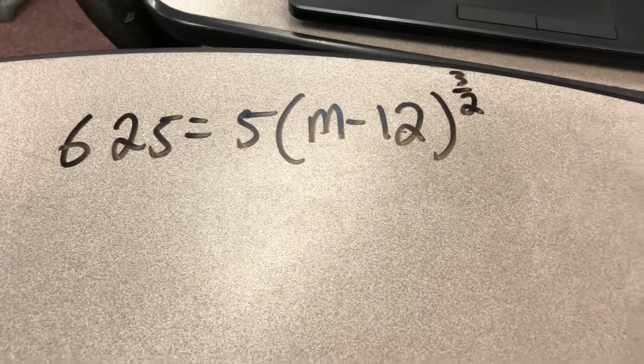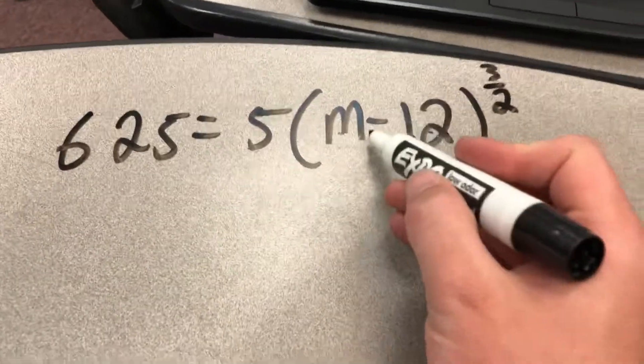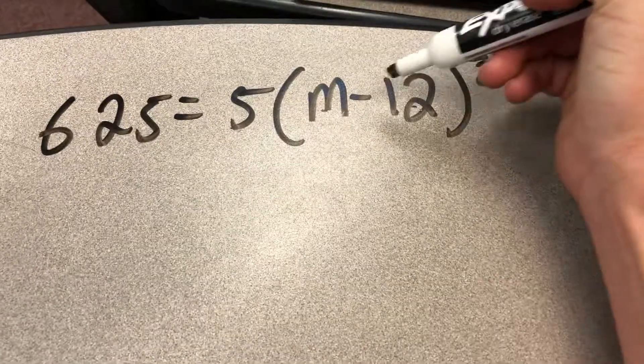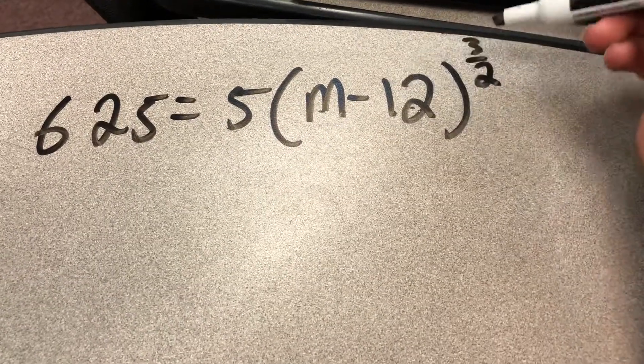But we need to start with the farthest away number first. You're going to think of this negative 12 as being trapped by the exponent, so we're not going to deal with that negative 12 first until after we deal with up here.